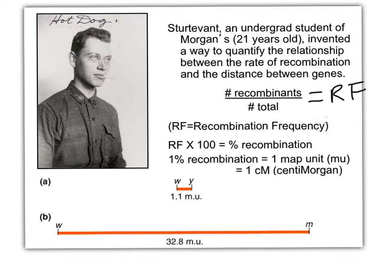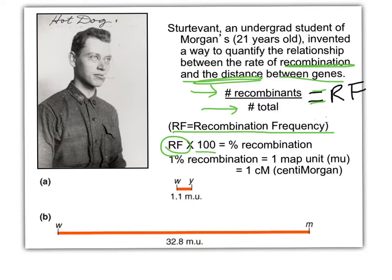Today we're going to talk about mapping using the two-point cross, and the relationship between how much recombination happens between genes is directly proportional to the distance between these two genes. Or, said differently, the number of recombinants — which is the number of times crossing over happened — over the total progeny, all the offspring, equals the recombination frequency. RF, recombination frequency, frequency of crossing over, how often crossing over happens.